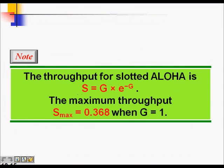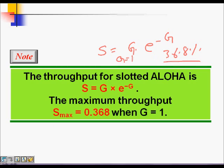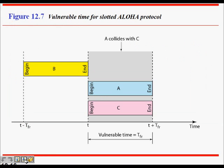With Slotted ALOHA, the throughput formula becomes S = G · e^(−G), and the maximum throughput is 36.8 percent — achieved when G equals 1 frame per slot. This is double the efficiency of Pure ALOHA, and the vulnerable time is just one Tfr.